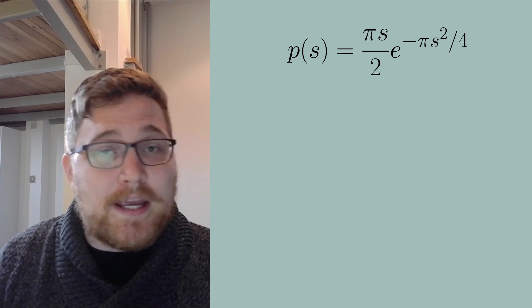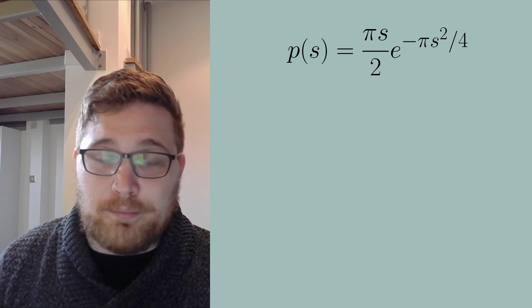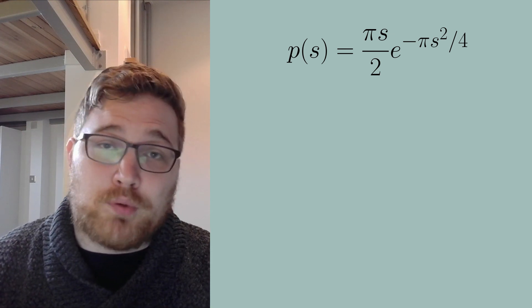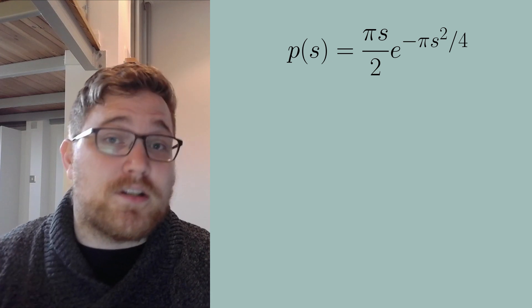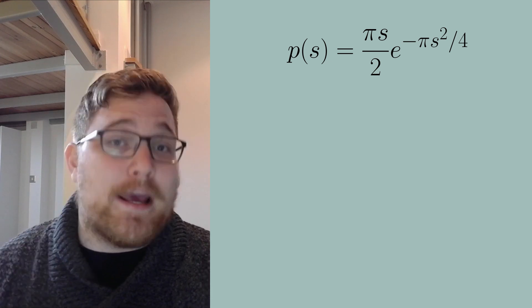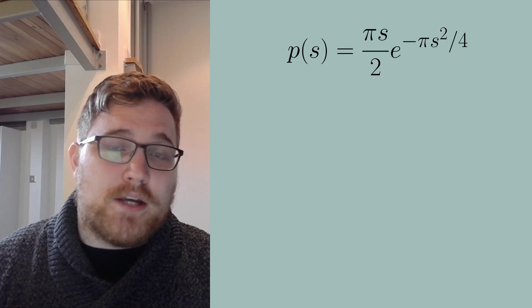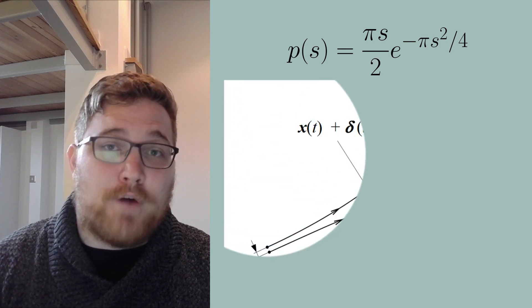But before I explain what the equation is about, let's give a little bit of context. So chaos is probably something that you've heard about before. Chaos in a classical setting is a dynamical statement. The easiest way to summarize it is the following.